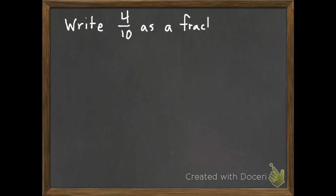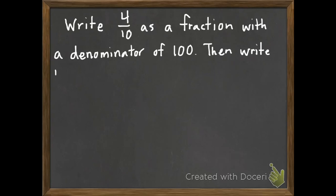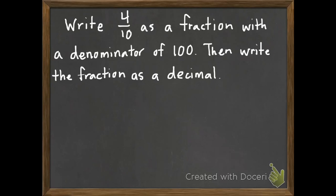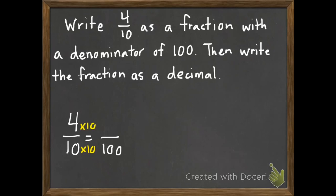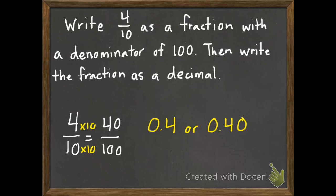Here's our second example. We need to write four tenths as a fraction with a denominator of one hundred, then write the fraction as a decimal. So we have four tenths, and I want there to be a denominator of one hundred. Once again, everything has to do with tens, so we're multiplying by ten. Four times ten is forty, so forty hundredths. As a decimal we can write this as four tenths or forty hundredths — those are equivalent.